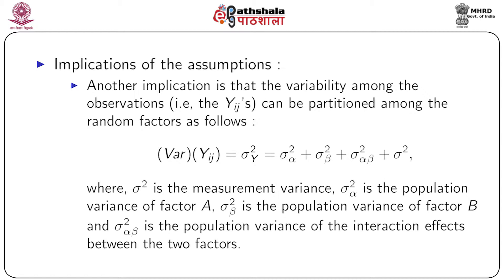In the above partition of the variability of y_ij, sigma squared is the measurement variance, sigma_alpha squared is the population variance of factor A, and sigma_beta squared is the population variance of factor B. Finally, sigma_alpha-beta squared is the population variance of the interaction effects between the two factors.